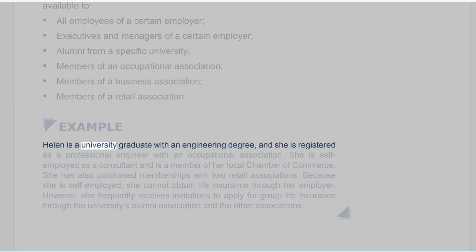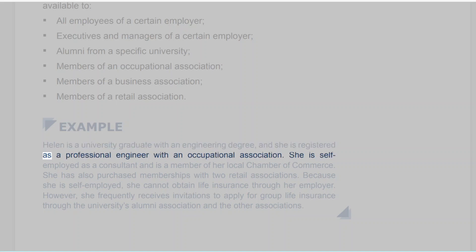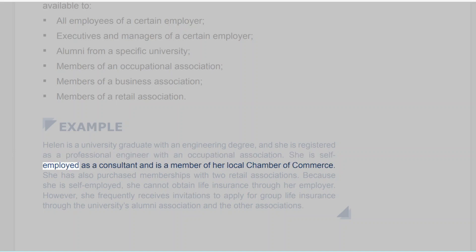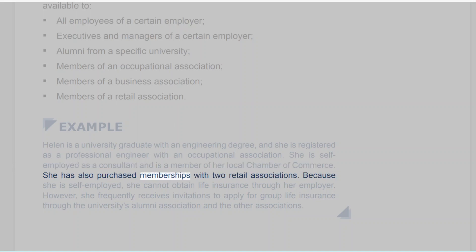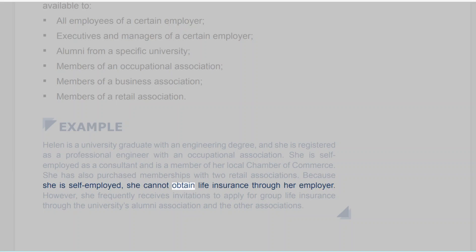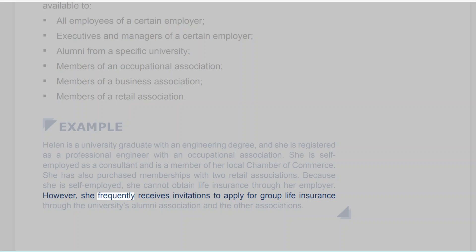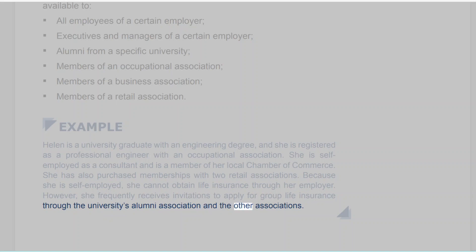Example: Helen is a university graduate with an engineering degree, and she is registered as a professional engineer with an occupational association. She is self-employed as a consultant and is a member of her local chamber of commerce. She has also purchased memberships with two retail associations. Because she is self-employed, she cannot obtain life insurance through her employer. However, she frequently receives invitations to apply for group life insurance through the university's alumni association and the other associations.